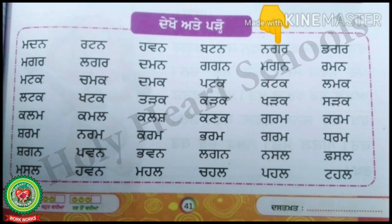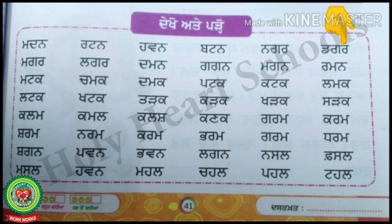Now look at the last line and start reading. The first word is dada gagga rara — dagar. After that, rara mamma nanna — raman. Then lala mamma kakka — lamak. And then the next word is sasara kakka — sadak.